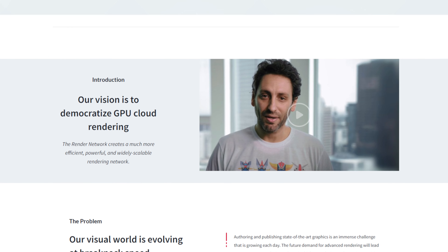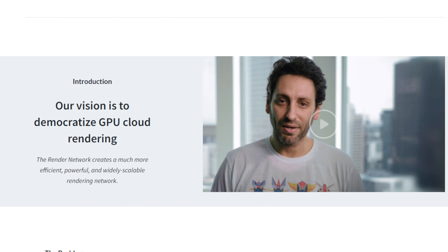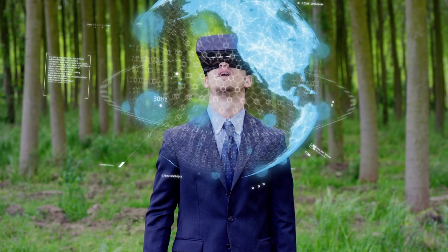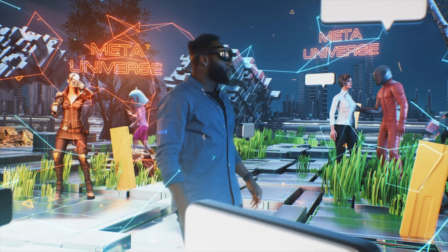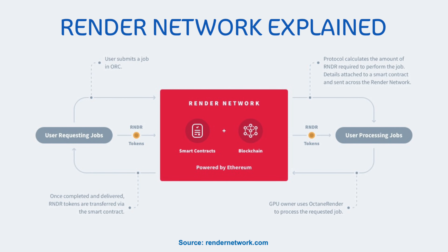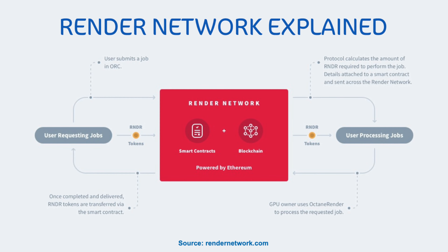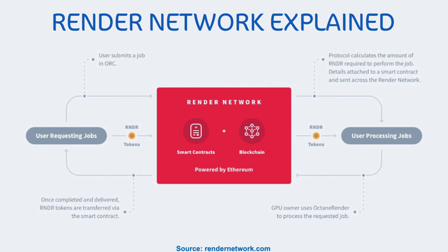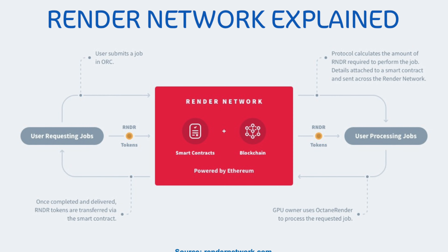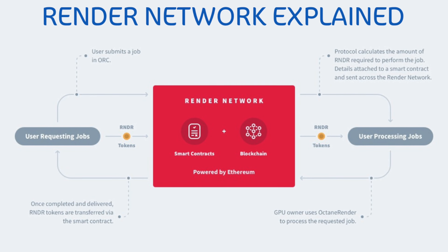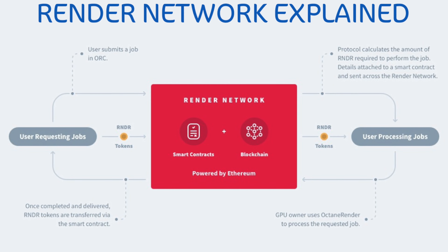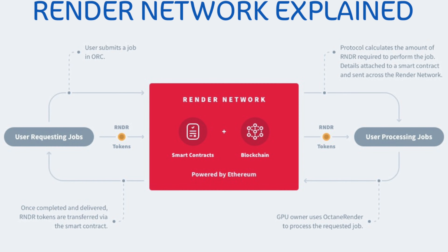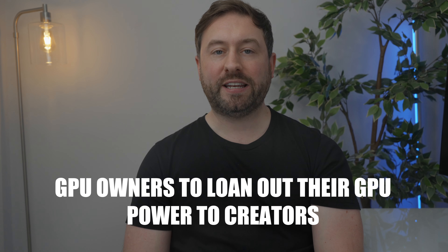The Render network creates a more efficient, powerful, and widely scalable rendering network, built with creators in mind within the main sectors of media, augmented reality, gaming, virtual reality, and more. Users can share their GPU power on the Render platform and earn rewards for doing so. The network connects users looking to perform render jobs: a user submits a job, the protocol calculates the amount of render tokens required, details are attached to a smart contract and sent across the Render network, a GPU owner uses Octane Render software to process the job, and on completion, render tokens are transferred via smart contract to the GPU owner as payment.